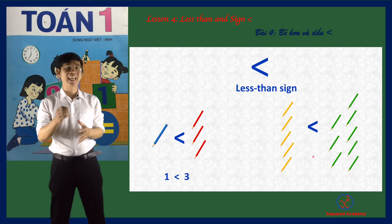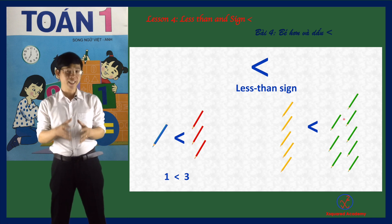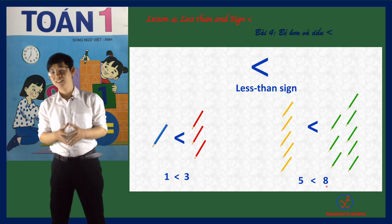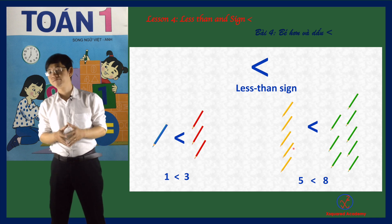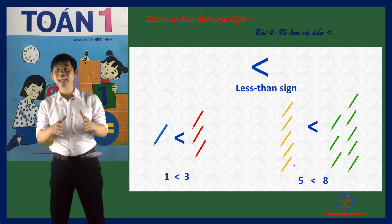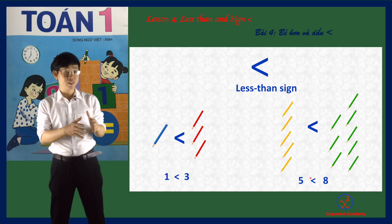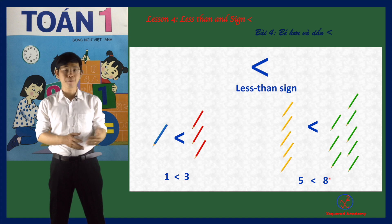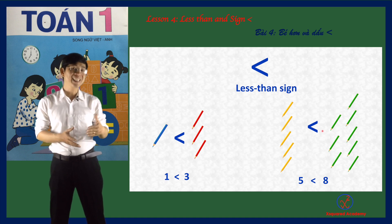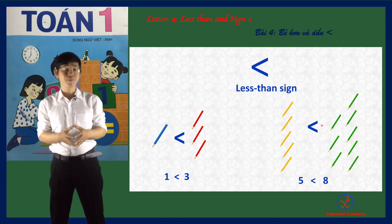Another example. Five is less than eight. We write 5 < 8. Five is a small number, so it is on the small side. And eight is a large number, so it is on the big side.